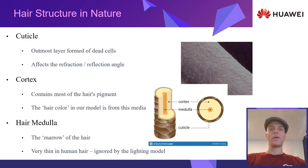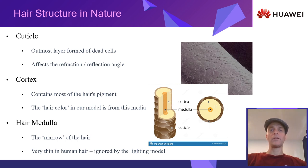Before moving to lighting, it's wise to review the structure of hair in nature so we can imitate how light interacts with it. Hair is constructed of three layers: the outside layer is made of cuticles — thin tilted shells made of dead cells. The middle layer is called the cortex, whose light absorption creates the hair color as we see it. Finally, the inside very thin inner layer is called the medulla, which is usually ignored in our lighting model.